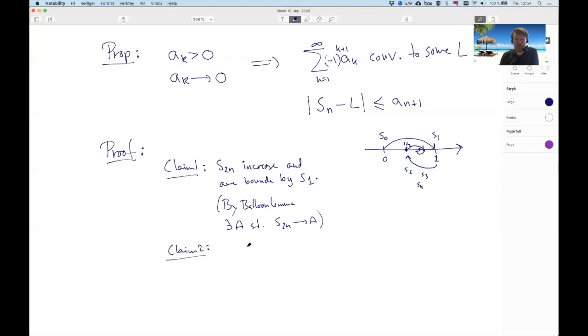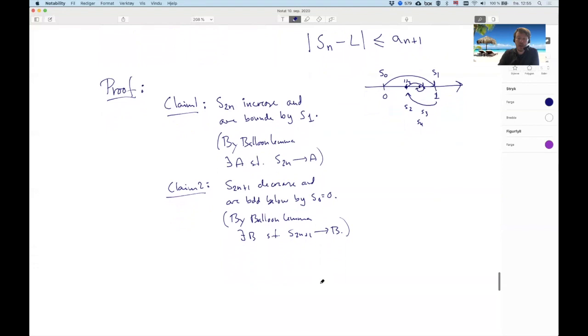And then we have claim two. If you take the odd guys now, these guys decrease and are bounded below by S_0 or zero if you want. And again, if we multiply everything here by a minus, then we have an increasing sequence that's bounded above. So again, we can apply the Bolzano lemma. So by Bolzano lemma, there exists a B such that the S_{2n+1} converge to B.